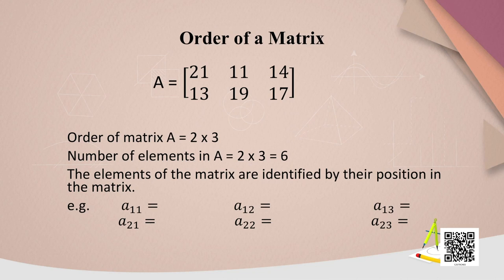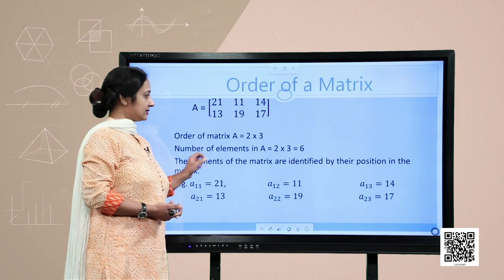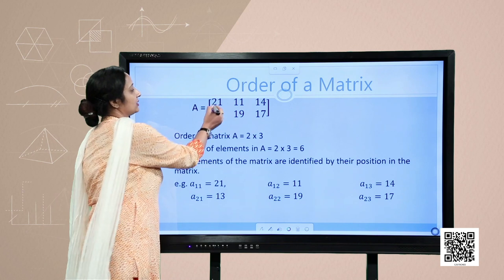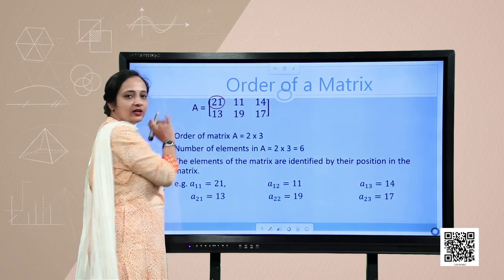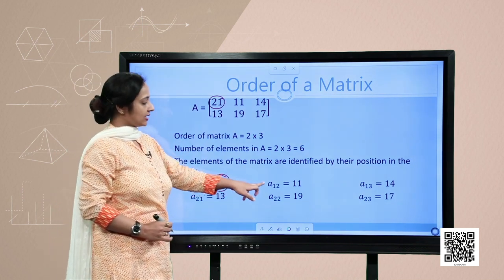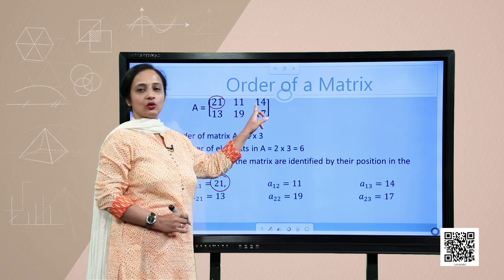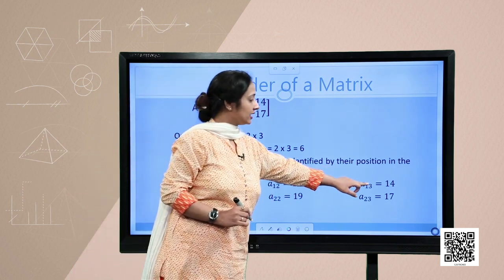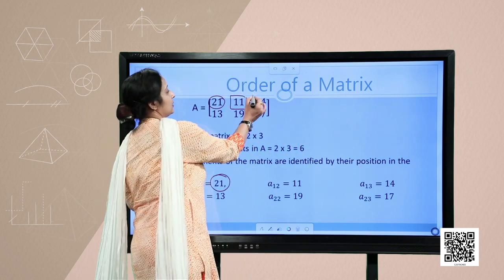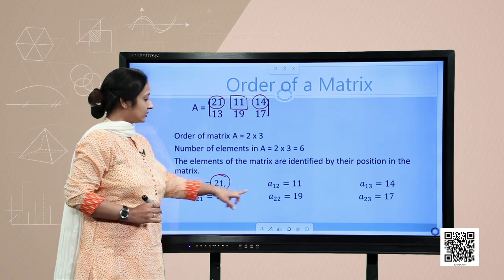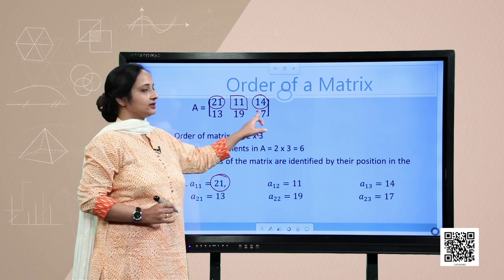The order of matrix A is 2 by 3 and its number of elements is 6. Let us identify the positions of elements in the matrix. The element 21 is in the first row and first column, so its name is A₁₁. Similarly, A₁₂ is in the first row and second column, and A₁₃ is in the first row and third column. For the second row, A₂₁, A₂₂, and A₂₃ are 13, 19, and 17 respectively.